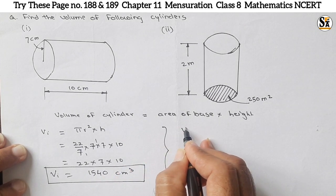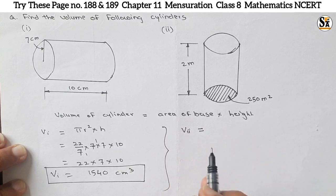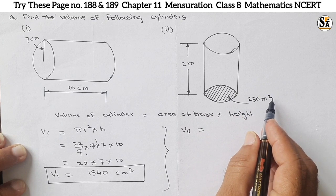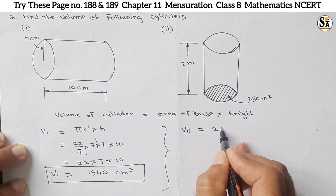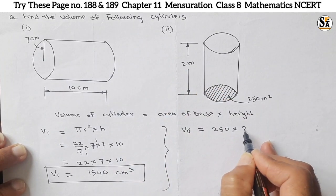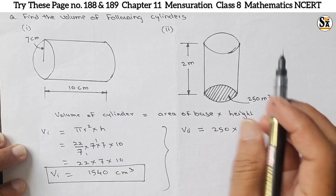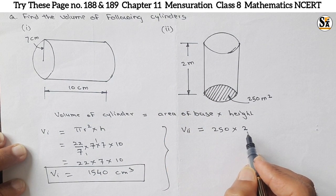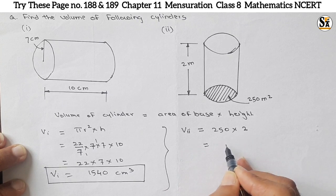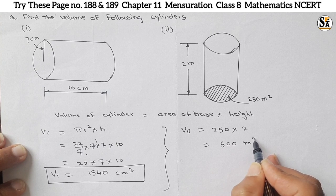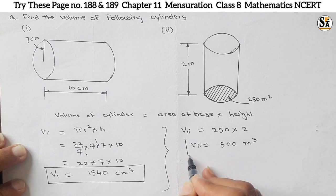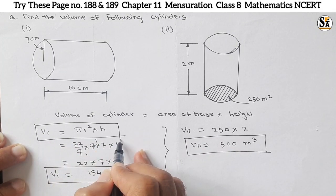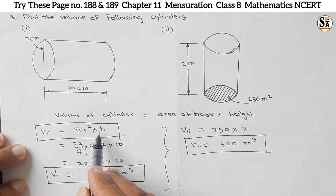For the second cylinder, V₂ = area of base × height. Here the base area is directly given as 250 meter square, and height is given as 2 meters. Since both units are already in meters, no conversion is needed. So V₂ = 250 × 2 = 500 meter cube. Remember: volume of any cylinder = π r² h.